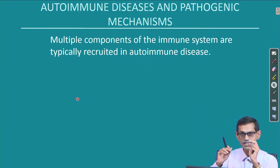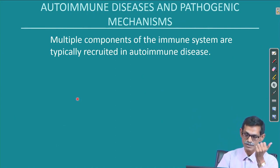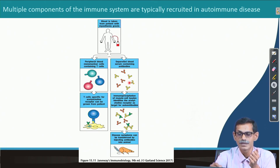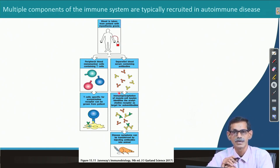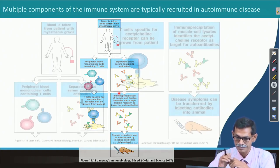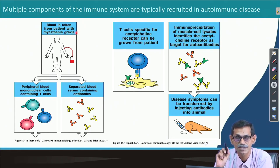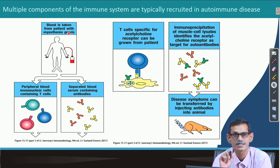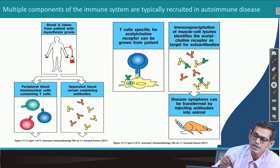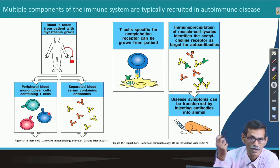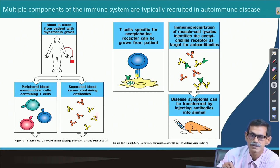Multiple components are responsible for autoimmune disease. The major components of the immune system are T cells and B cells. B cells are not directly involved—it is the antibody they produce that is responsible. For example, in myasthenia gravis, if you take blood from the patient, you will find T cells including TH1, TH2, and TH17, and there will also be antibodies.